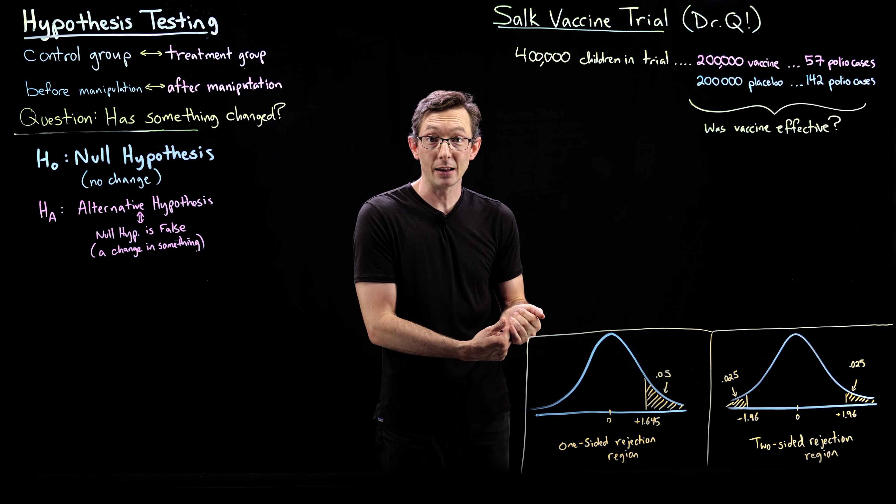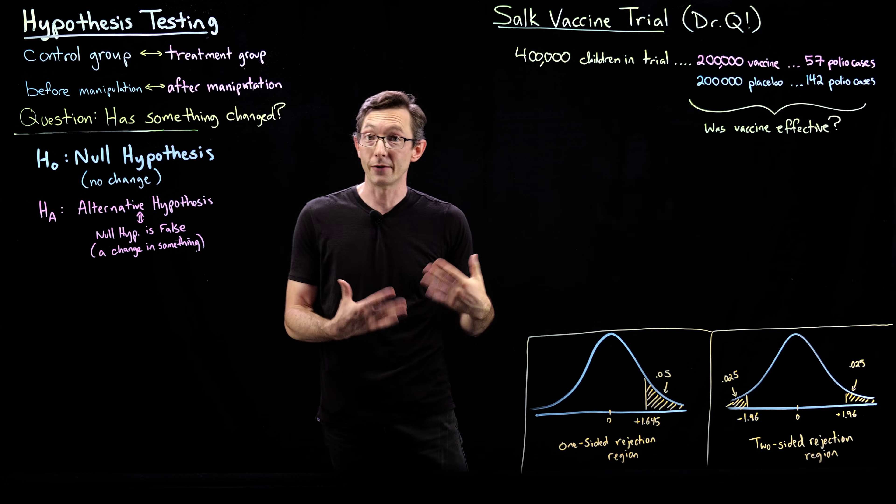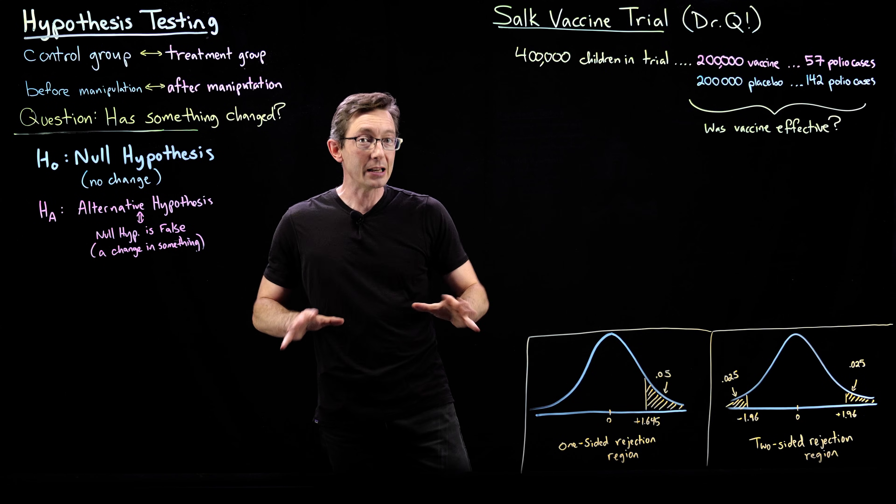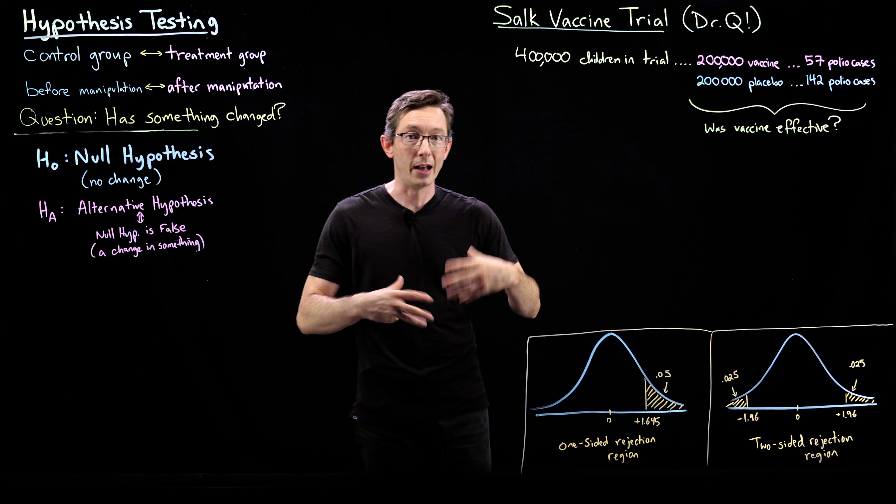200,000 were given a shot with the actual vaccine, and 200,000 were given a shot with a placebo. You had to give them a shot that had a placebo. Otherwise, they might know that they weren't getting the treatment, and that might change their health outcomes. So this was a double-blind randomized study. The doctors didn't know who was getting the vaccine or the placebo. The children didn't know who were getting the vaccine or the placebo. And that's really important in these big trials to make it double-blind and randomized.